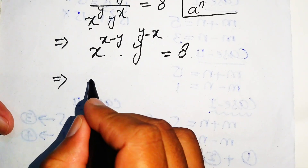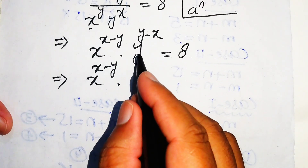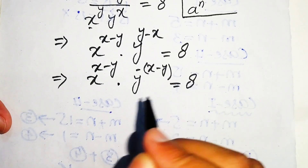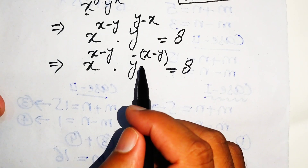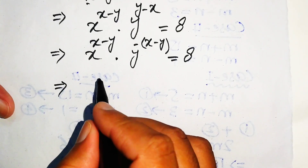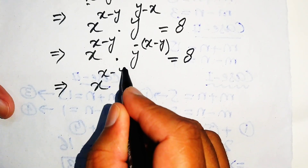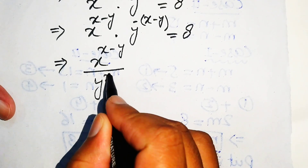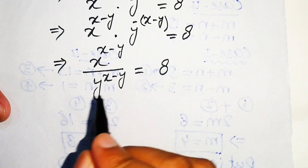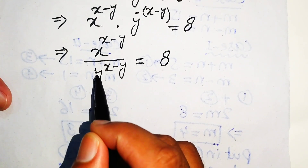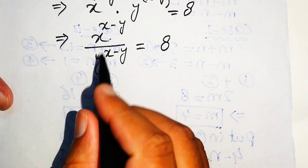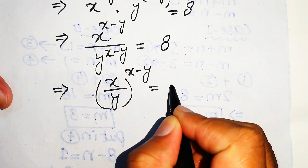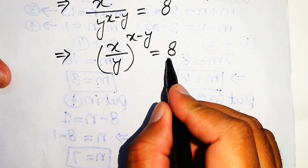We rewrite this as x to the power of x minus y times y to the power of negative (x minus y), equals 8. Since the exponent on y is negative, we move it to the denominator: x to the power of x minus y divided by y to the power of x minus y equals 8. Since the exponents are the same, we combine the bases to get (x over y) to the power of x minus y equals 8.